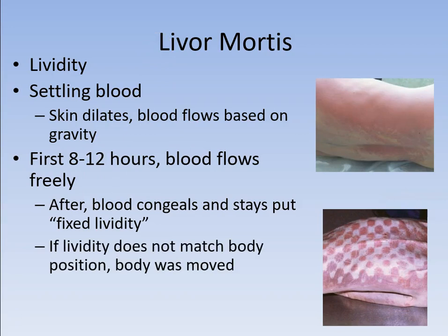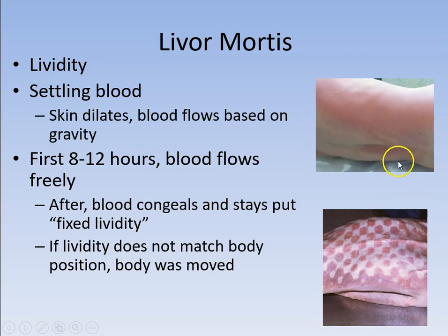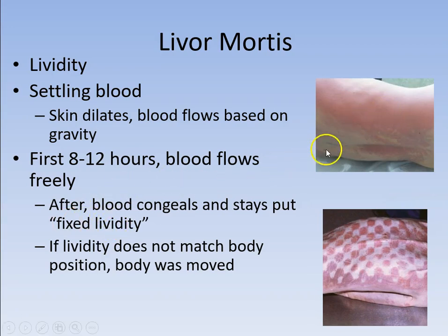If we find a body laying in a particular position and the lividity — the blood within the body that we can see in the skin — doesn't seem to match the position, we know the body was moved. There's a diagram here: the lividity is fixed right around the lower back and spine, and yet the person is laying on their side. That tells us the person was originally laying on their back when they expired, and then sometime later, after lividity was fixed, the body was moved.